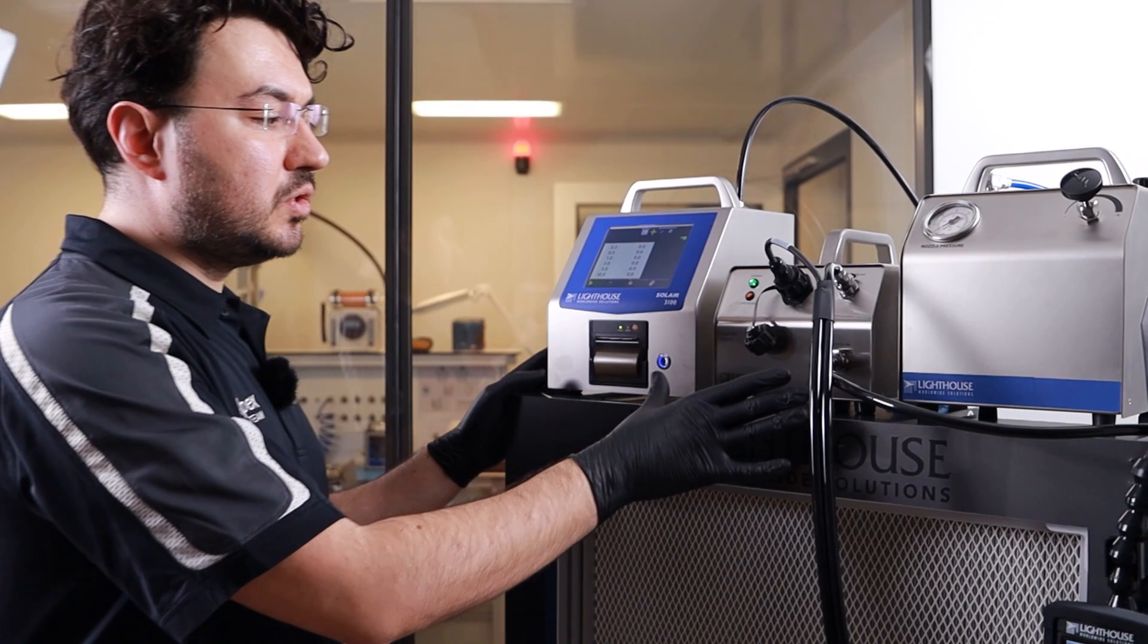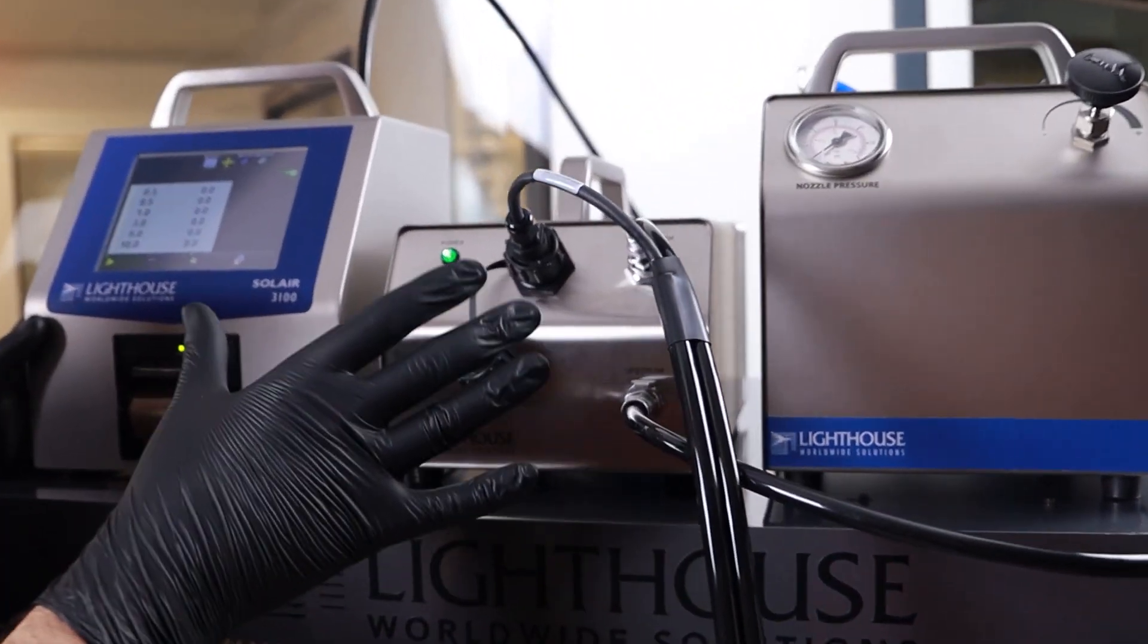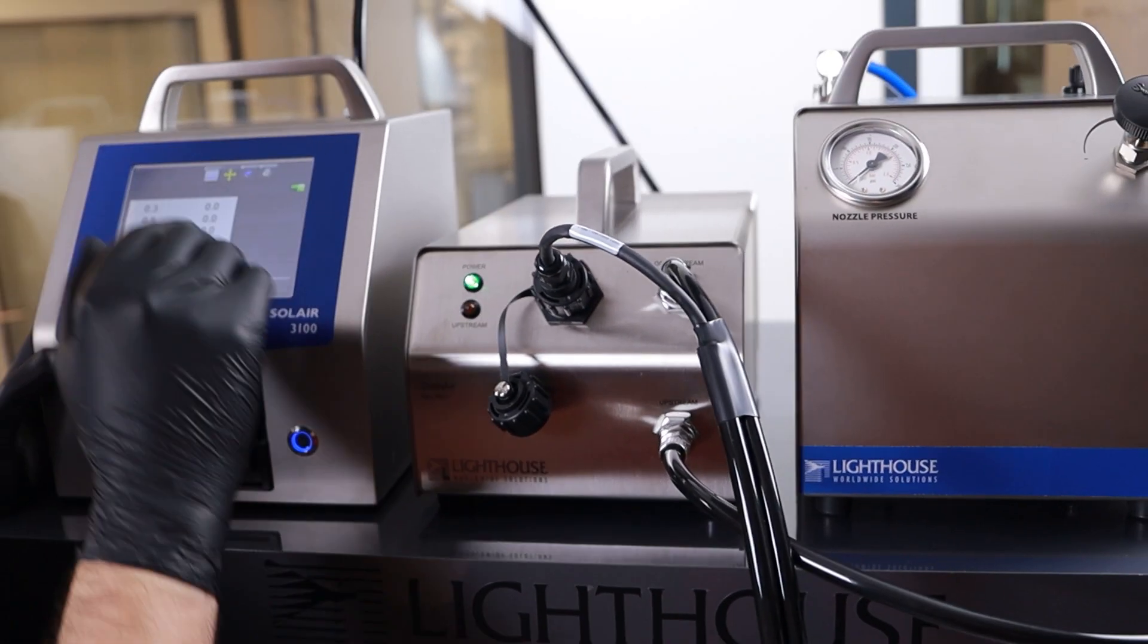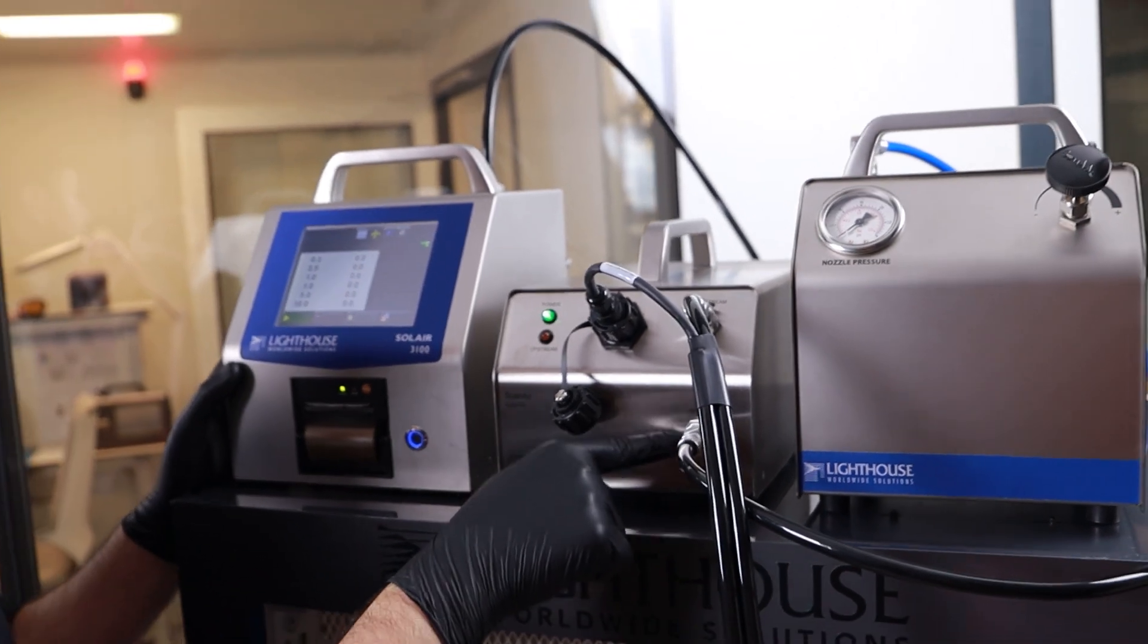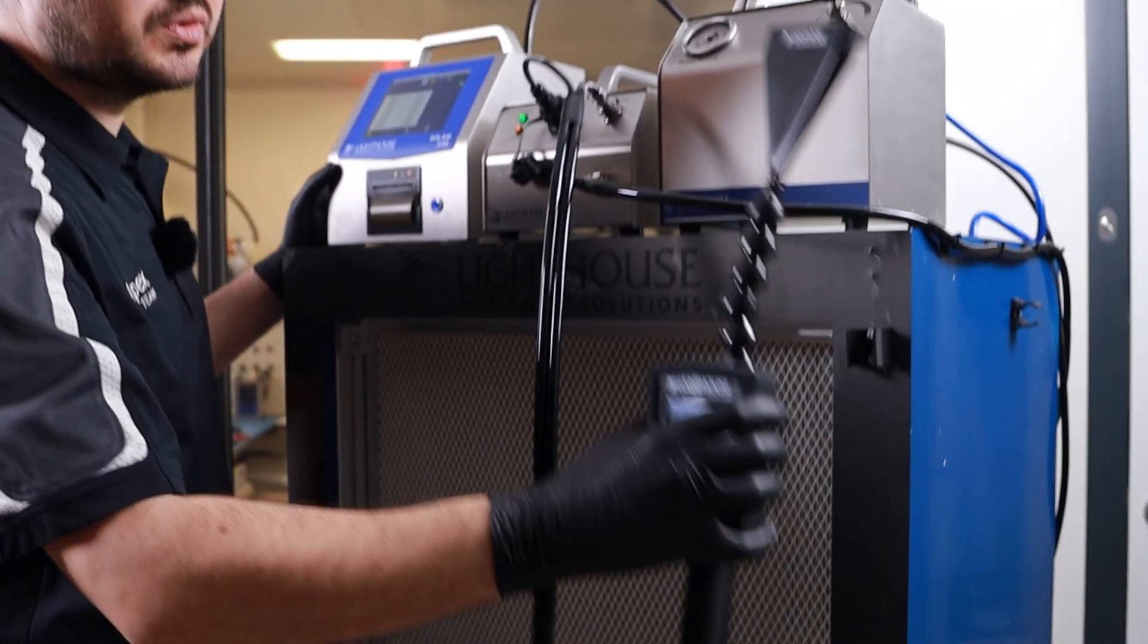The second unit is the Intelligent Diluter, which is a Scanner Pro dilution system. This unit connects directly to the particle counter and controls by upstream and downstream measurement thanks to this item number 3,